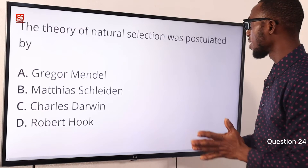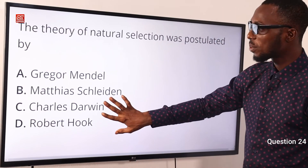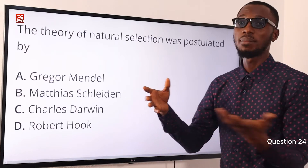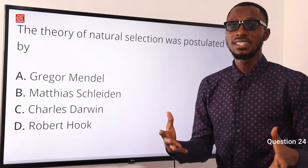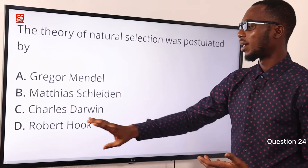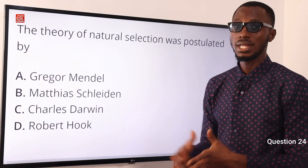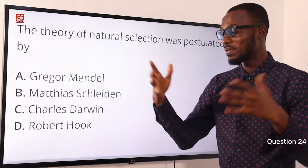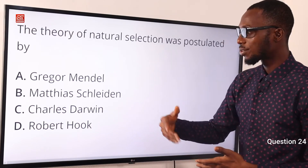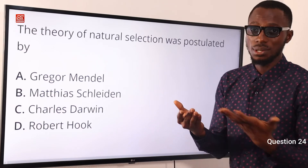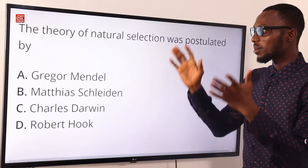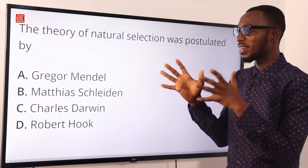Number 24. The theory of natural selection was postulated by whom? It was postulated by Charles Darwin. We have Gregor Mendel — you are talking about the law of heredity. We have Matthias Schleiden, a German botanist, who helped us know that plants are made up of cells — we can attribute him to cell theory. Robert Hooke can also be attributed to cell theory. Charles Darwin is for natural selection, Matthias Schleiden for cell theory regarding plants, Gregor Mendel for the law of heredity. So the theory of natural selection was postulated by Charles Darwin — option C.